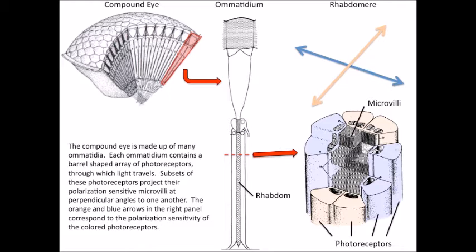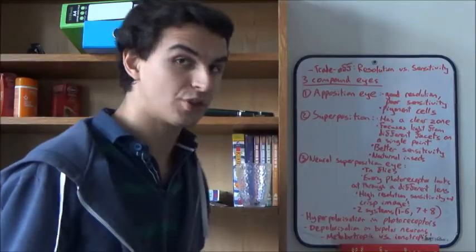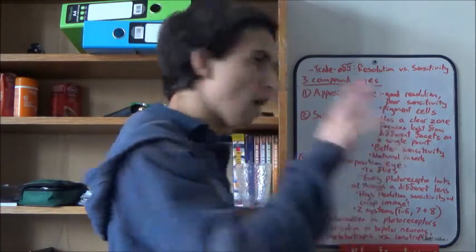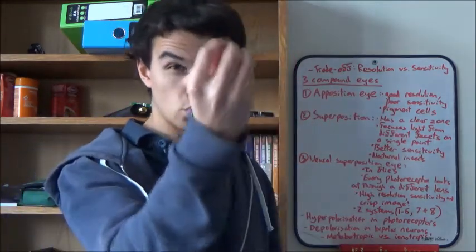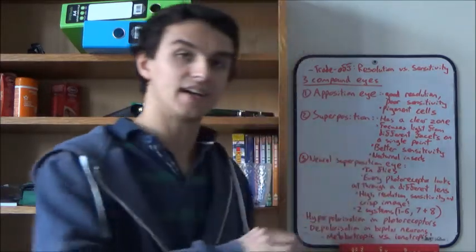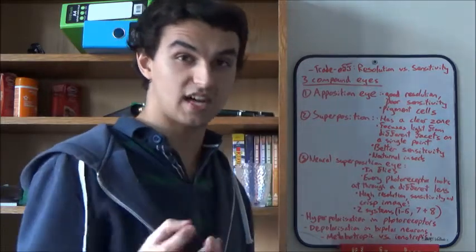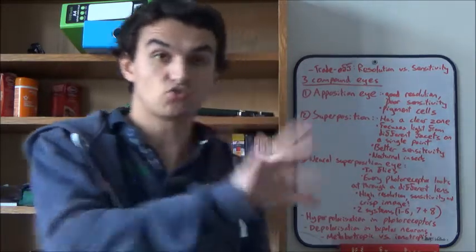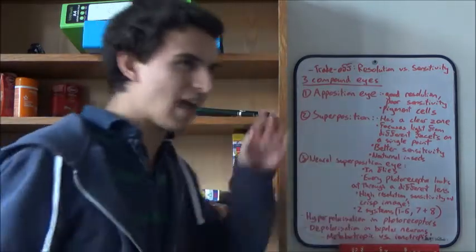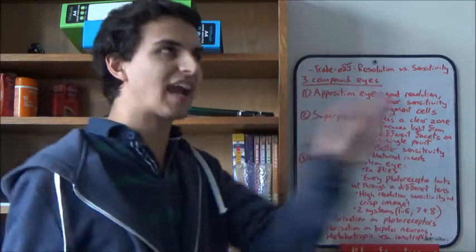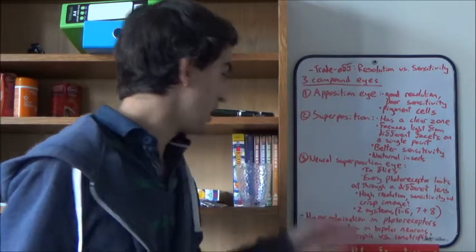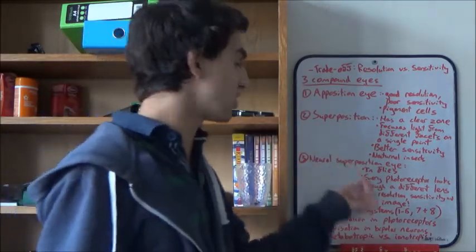The thing with the neural superposition eye is that, unlike in the others where all eight photoreceptors are found in one ommatidium, this is no longer the case. In this eye, each ommatidium has a specific type of photoreceptor. And it's surrounded by ommatidia which contains different photoreceptors. Now every photoreceptor is looking out through a different lens. And this gives incredible resolution, incredible sensitivity, and a crisp image.